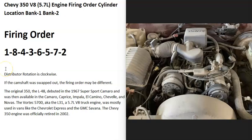Hello all. If you have a Chevy 350 V8 5.7 liter engine and you didn't know what the firing order is, the cylinder location, and which side of the engine is bank one or bank two, I thought I'd real quickly go over this. This is going to include many different vehicles over the years. The Chevy 350 was first introduced in 1967 and officially retired in 2002, but there are still many of them out there.